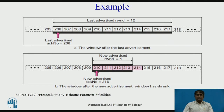Part A of the figure shows the values of last acknowledgement and receiver window. Part B shows the situation in which the sender has sent bytes 206 to 214, and bytes 206 to 209 are acknowledged. The new advertisement defines the new receiver window value as 4. When the send window shrinks, it creates a problem: the receiver is forced to maintain the right-hand wall of the window as shown in part A, because the receiver does not know which of bytes 210 to 217 have already been sent. One way to prevent this situation is to let the receiver postpone its feedback until enough buffer locations are available.